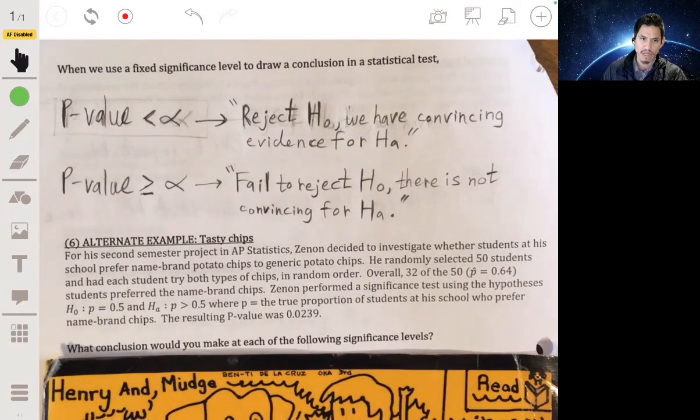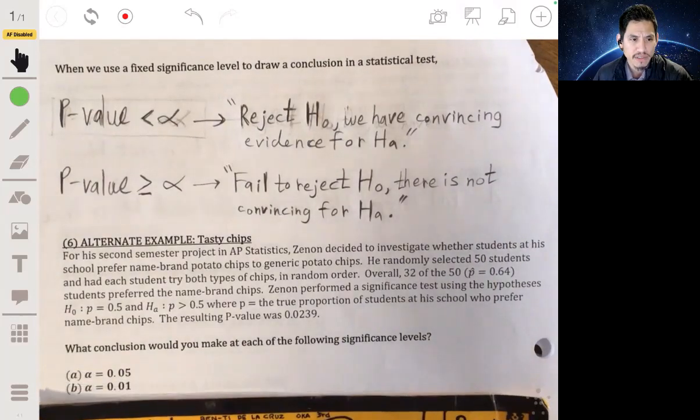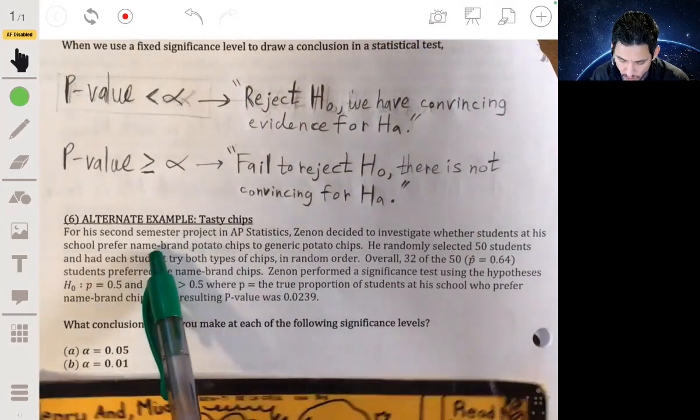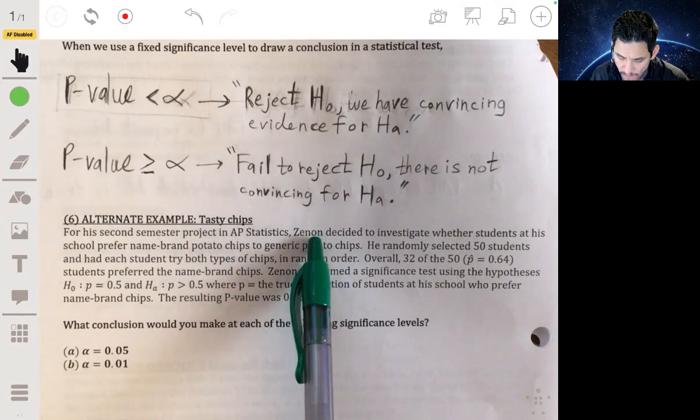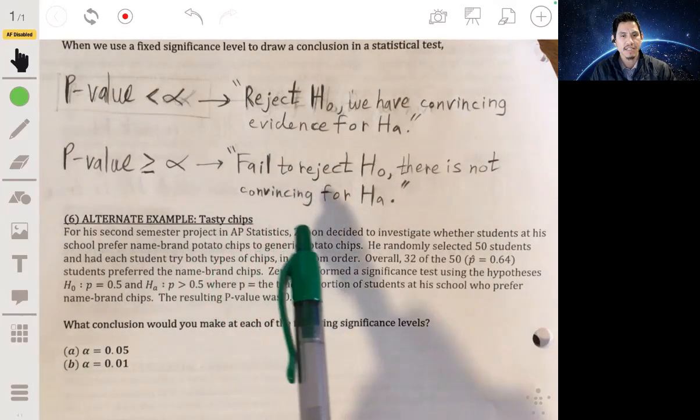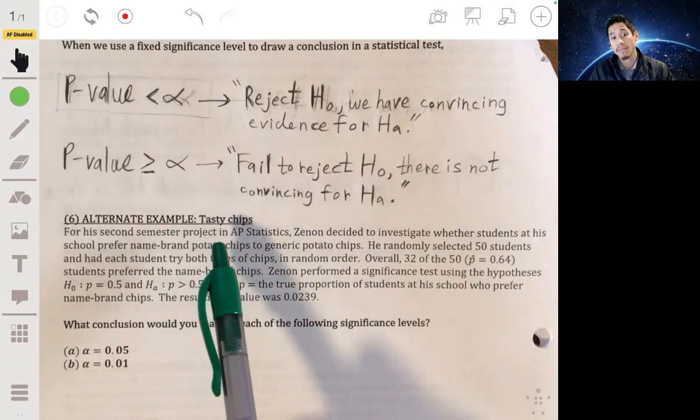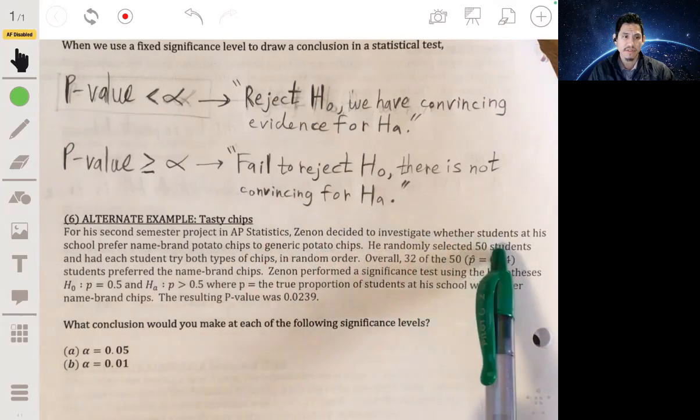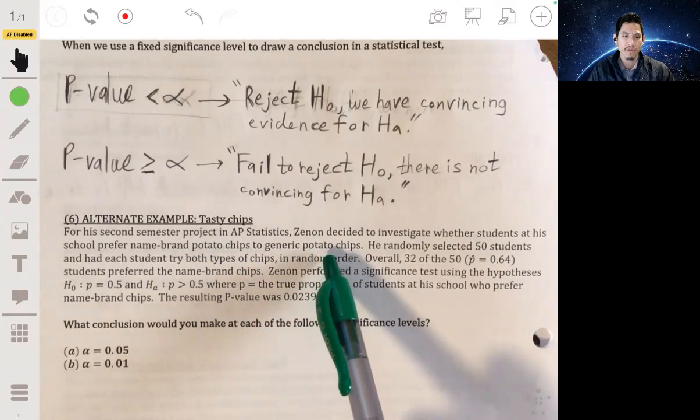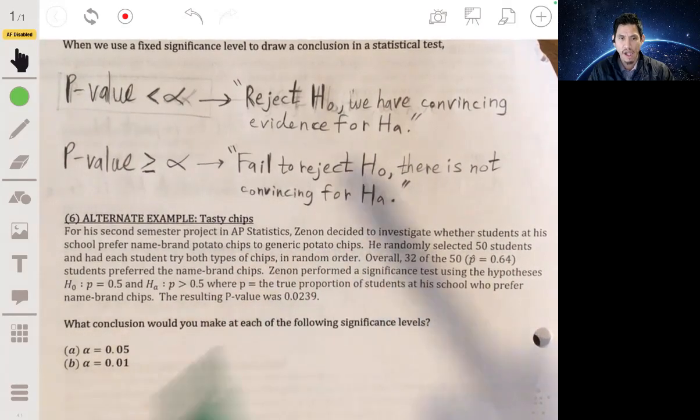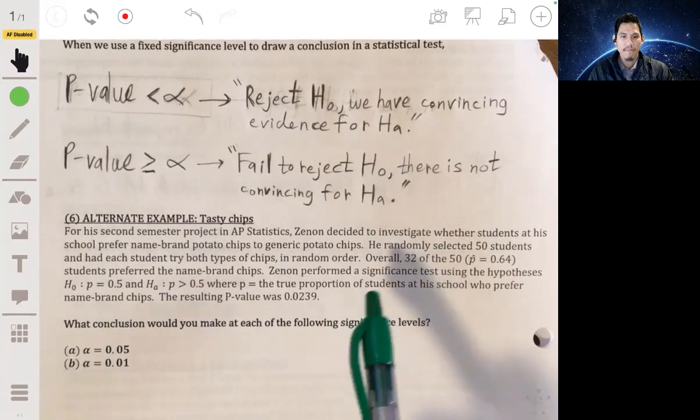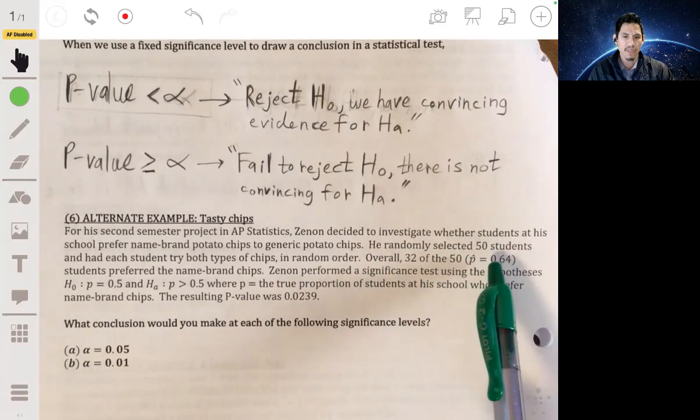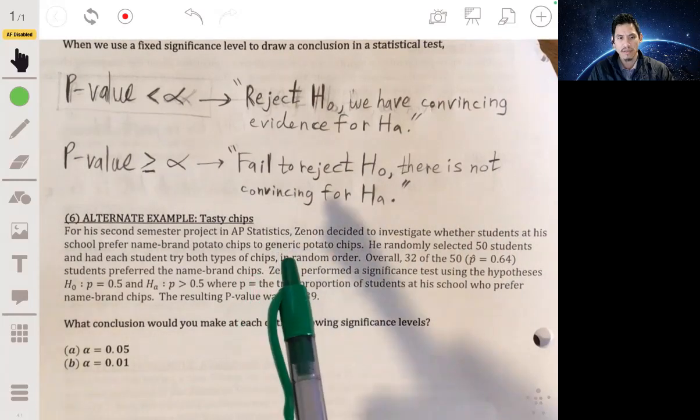Alright. So let's start going through an actual problem because this will all make much more sense. Okay. So let's look at this scenario here. We got Zenon and he's doing his second semester project in AP stats and he decides to investigate whether students at his school prefer name brand potato chips to generic potato chips. And so he randomly selects 50 students and had each student try both chips in a random order. Good for him. He knows about how to conduct the experiment properly. Overall, 32 of the 50 students, or 64% of them, say they prefer the name brand potato chips.